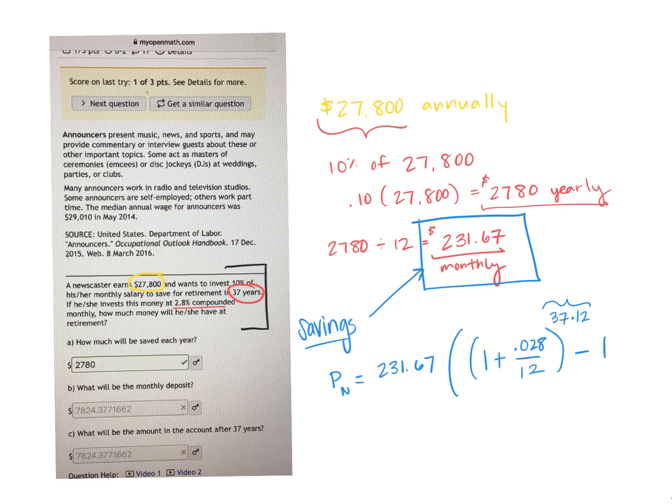We're filling the formula, minus 1, and this is all over our interest rate, 0.028 over 12.